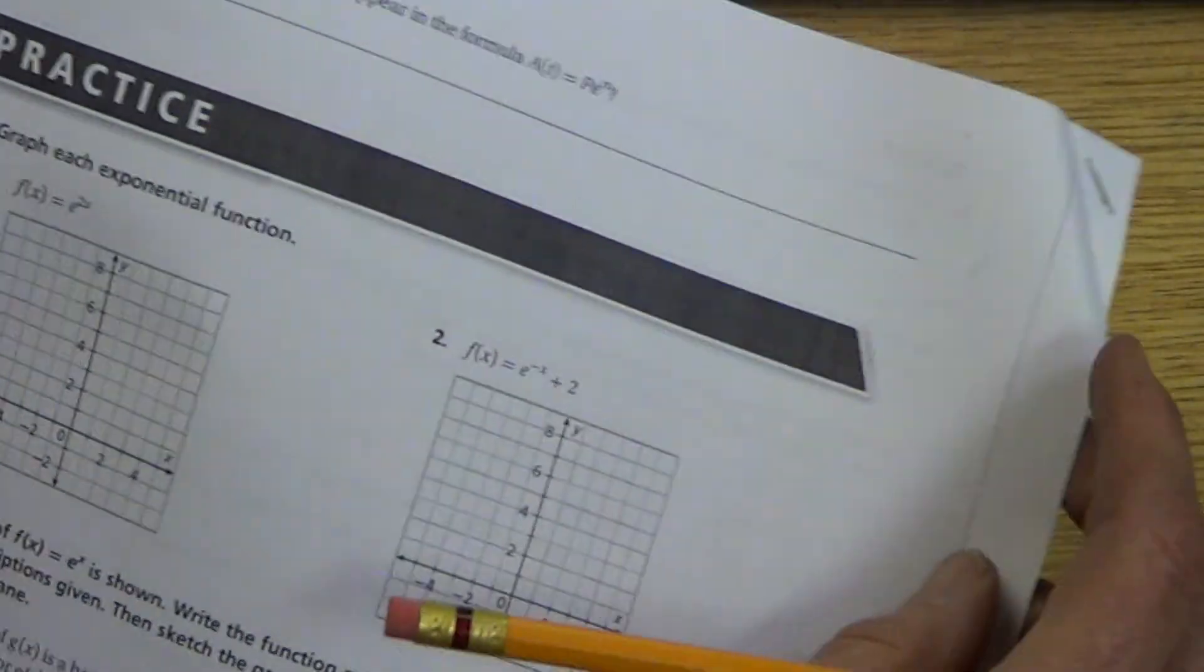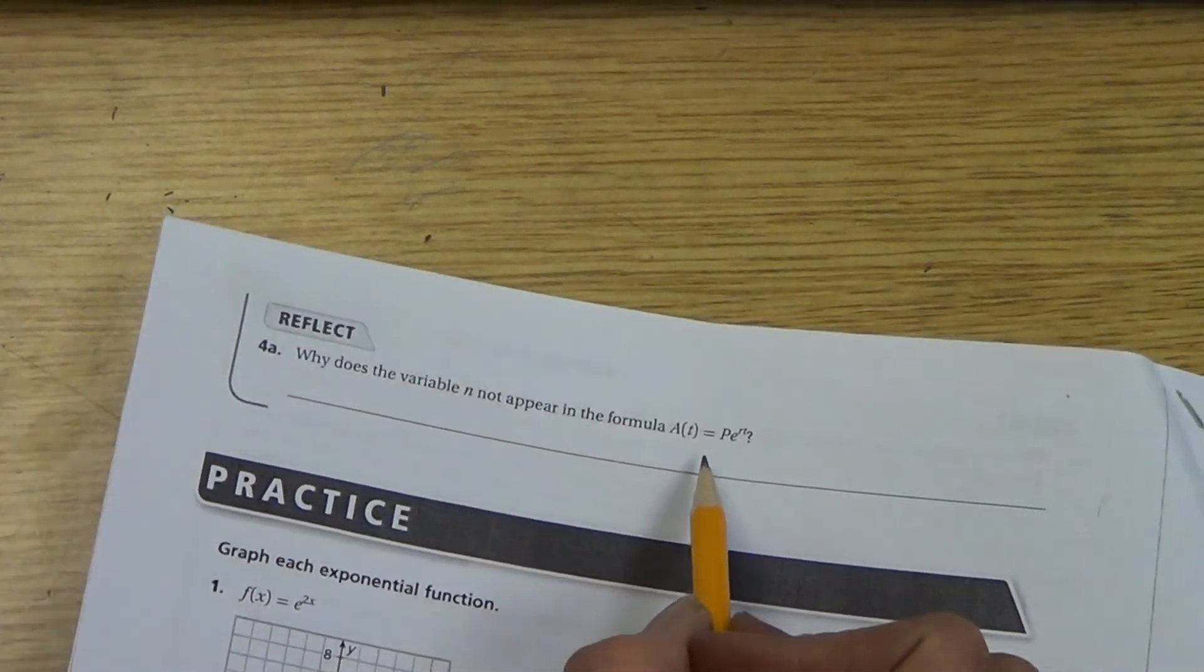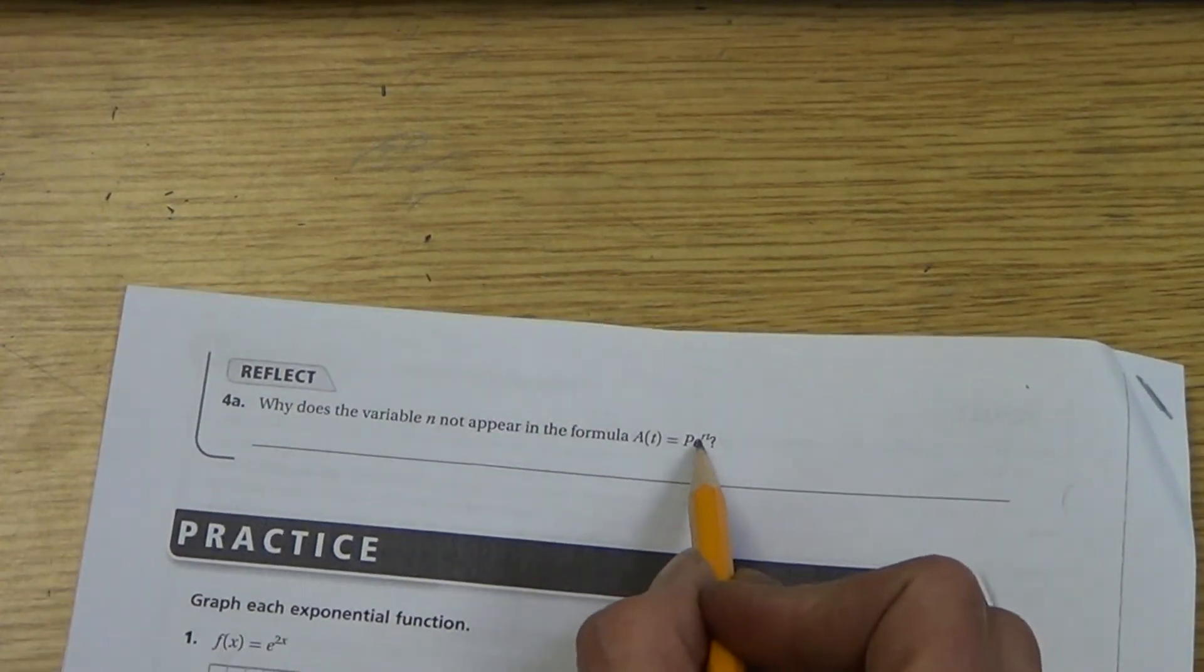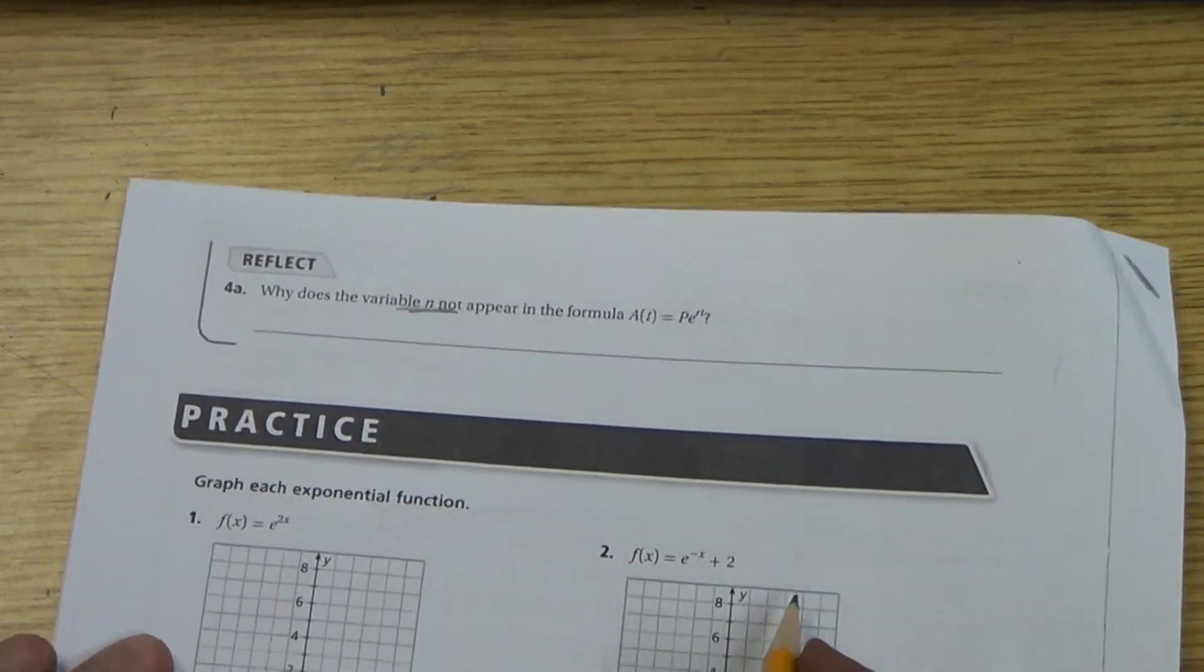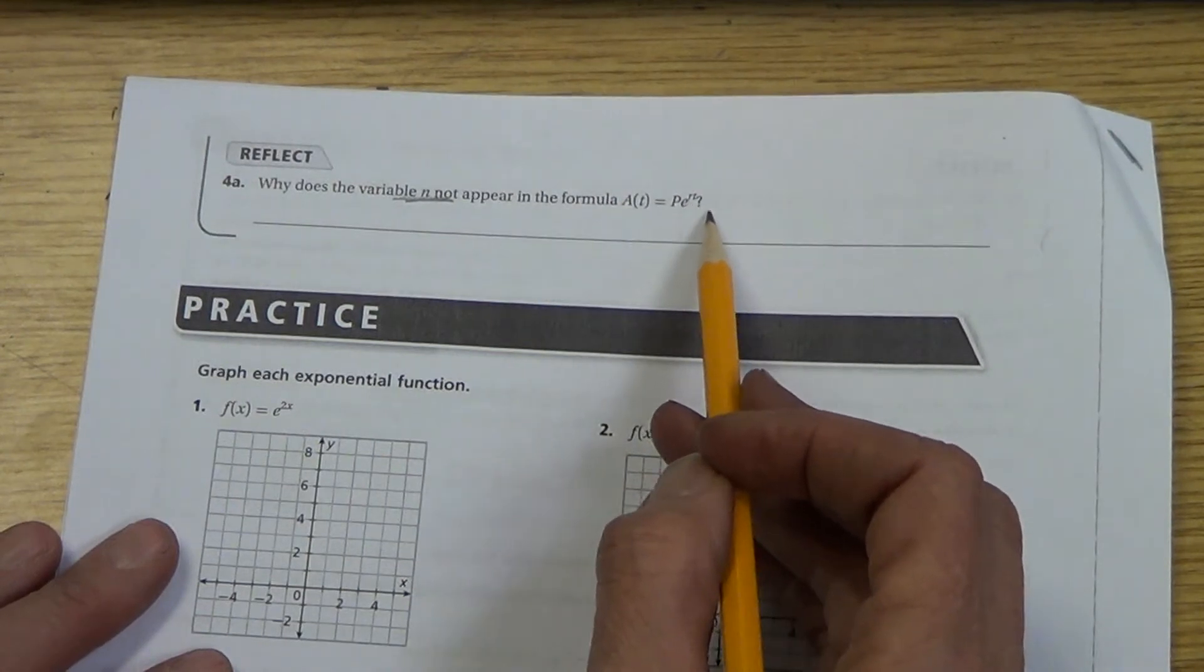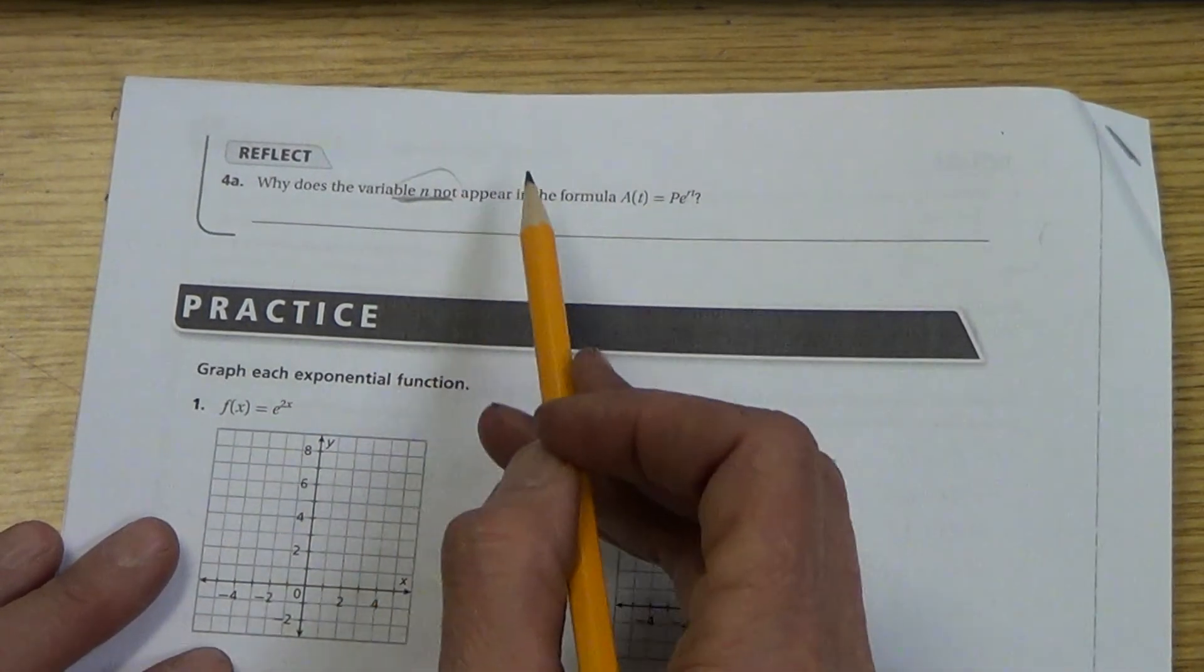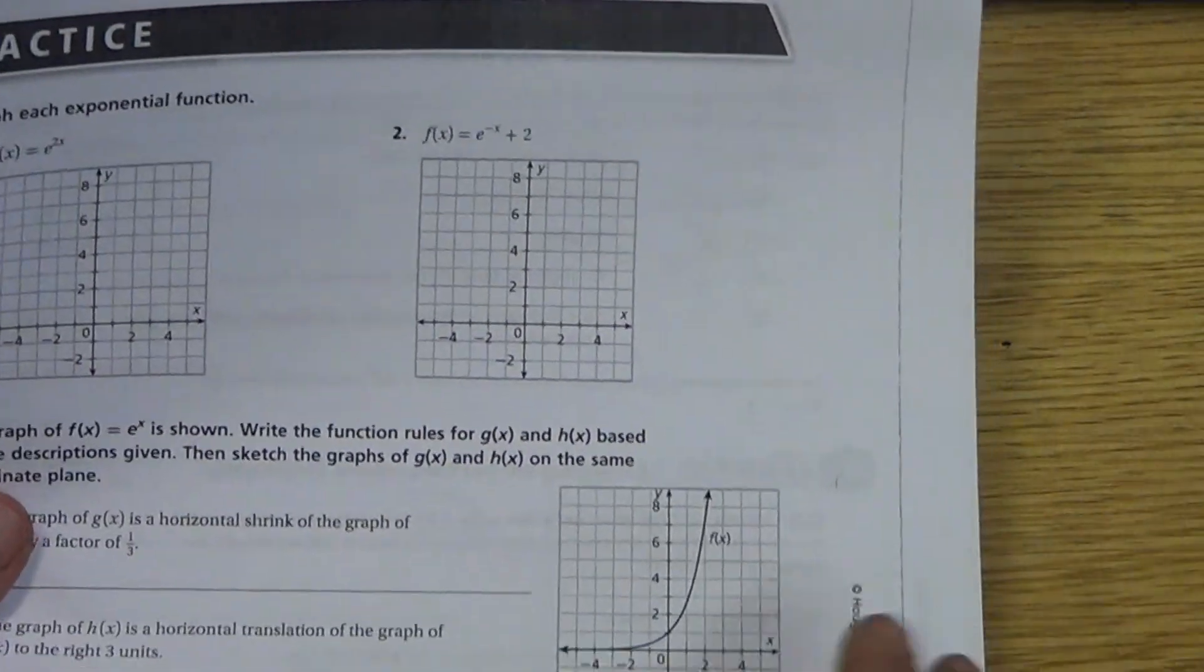Tomorrow in class, we'll go over this practice. Why does the variable n not appear in the formula P equals RT? Well, what did the n represent? Go back and look at that. The E is for continuously compounded interest. So think about what the n represented and explain why we wouldn't have it. We'll do the practice in class tomorrow. Come with questions over this. Thank you.